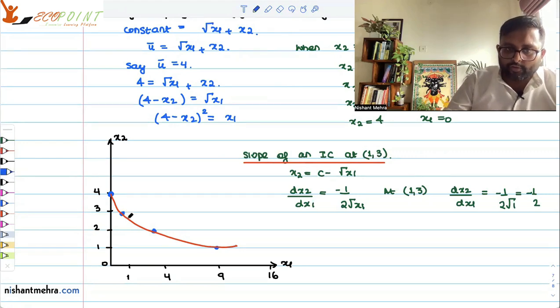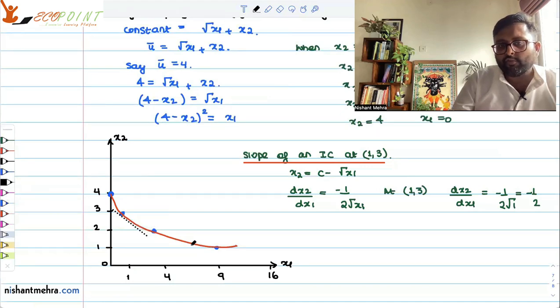Now, if you move down and right along the indifference curve, what will you find out? Whether the slope is increasing or slope is decreasing. So here, we have found out that the slope looks like somewhere like this. Now, supposedly, if I want to find out the slope of the indifference curve at (9,1).